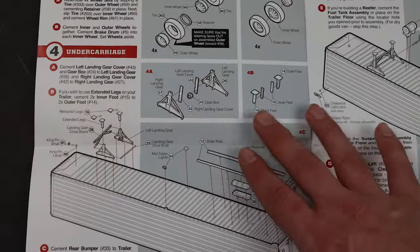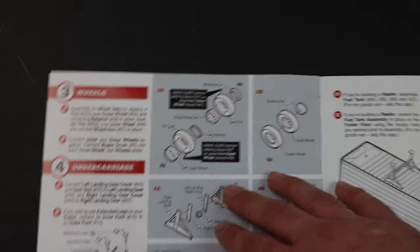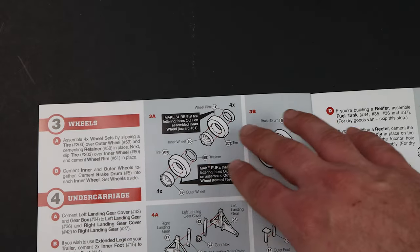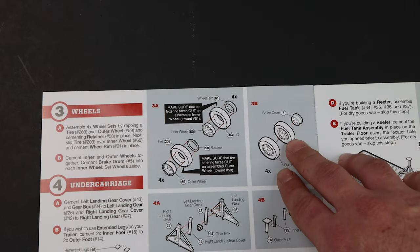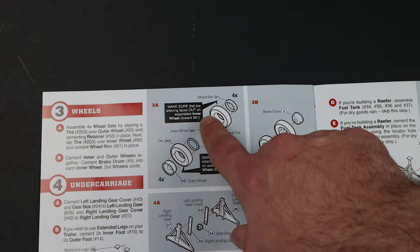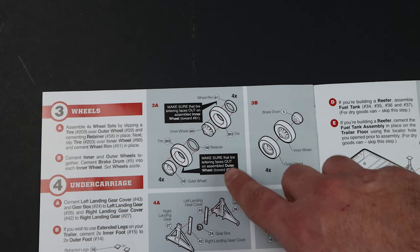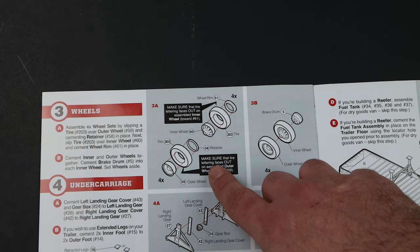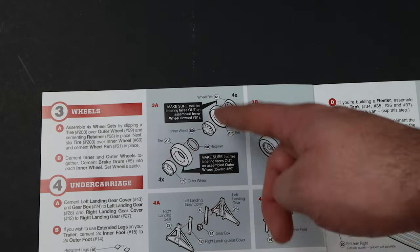And again, they give you a rundown of what's going on in every step, so you have an idea of what's going on there. Next page. Step three. You're just basically building up the wheels, the sets of them, attaching them together. And they make sure to tell you which side faces out on the wheels because the markings are only on the one side of the tire, which makes sense. You're not going to see between them anyways.